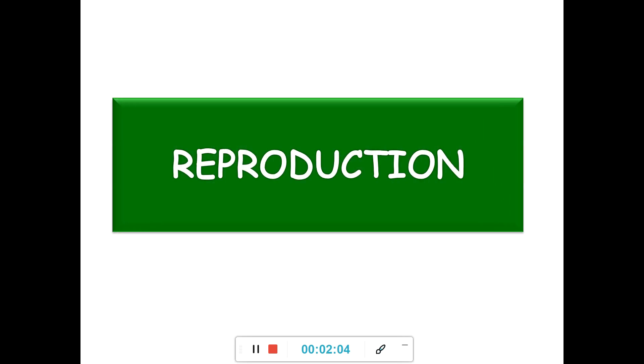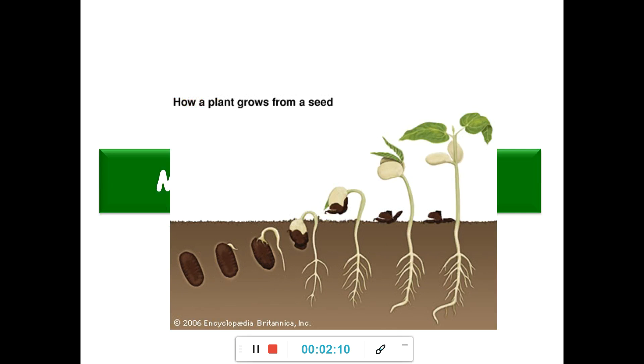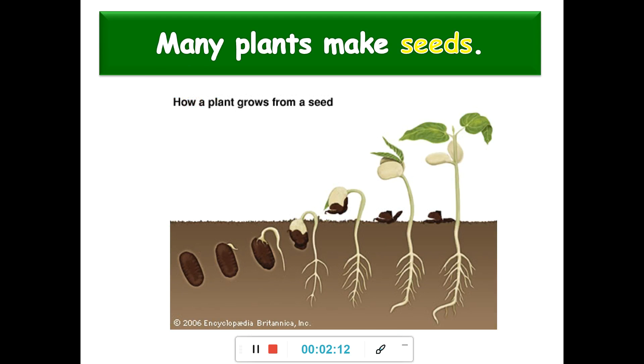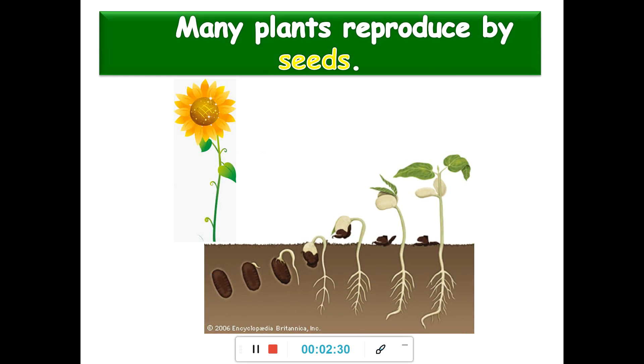Reproduction. Plants can make new plants. Many plants make seeds. Seed. Seeds grow into new plants. Seed. New plant. Many plants reproduce by seeds.